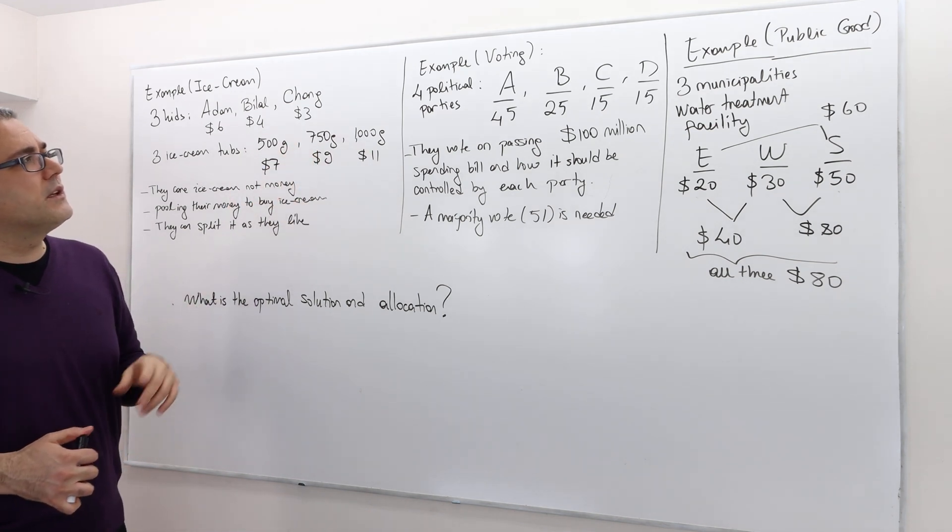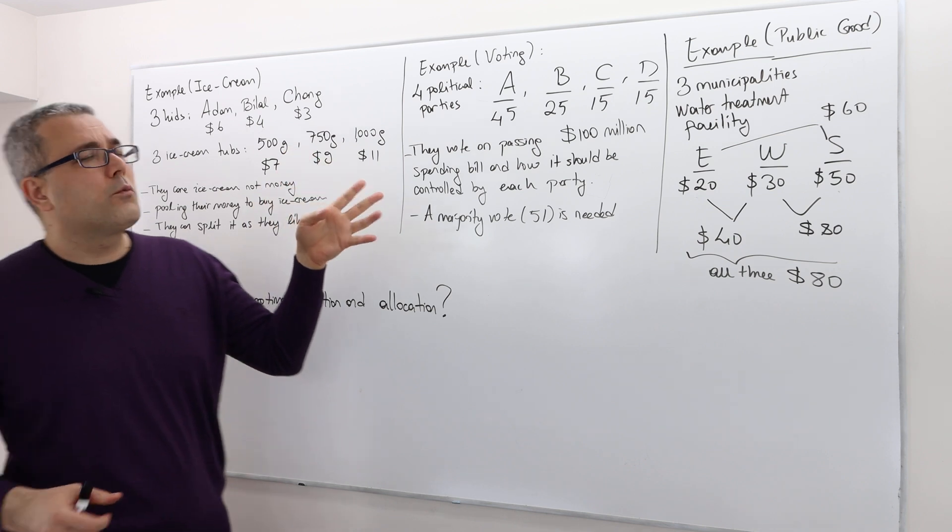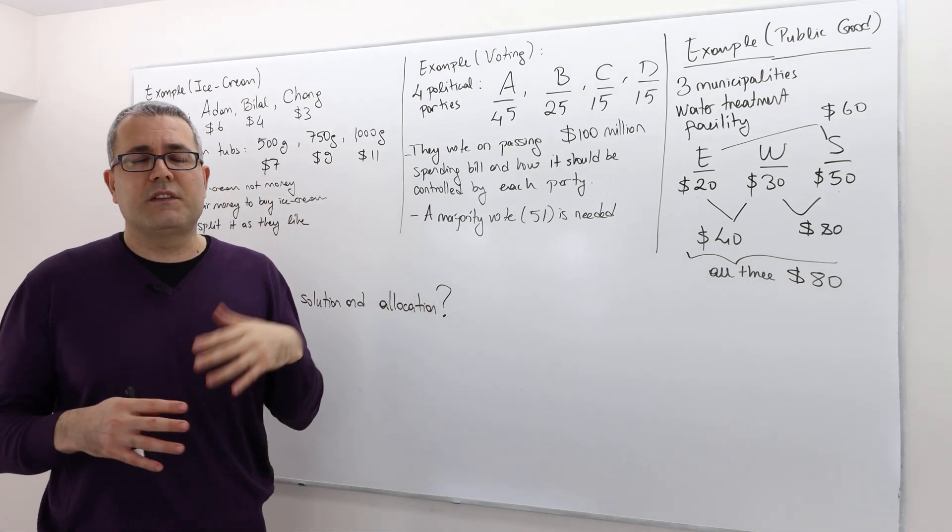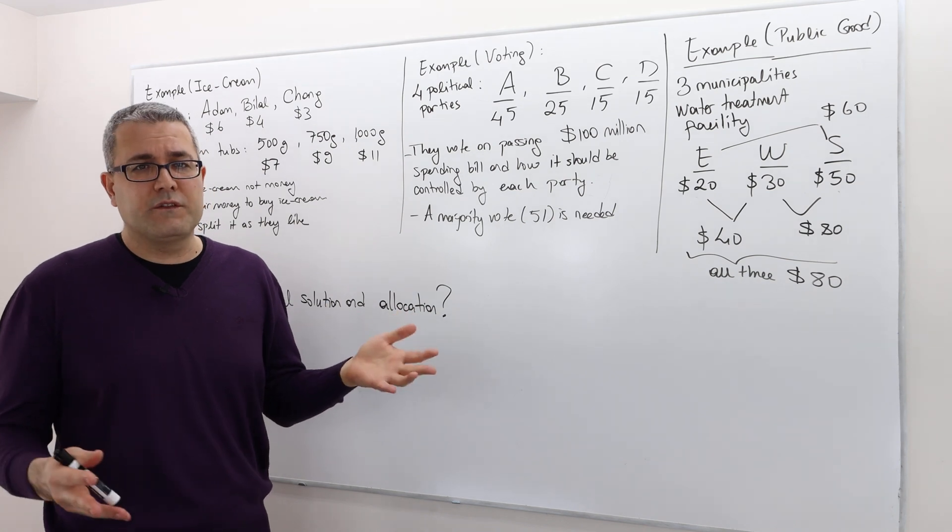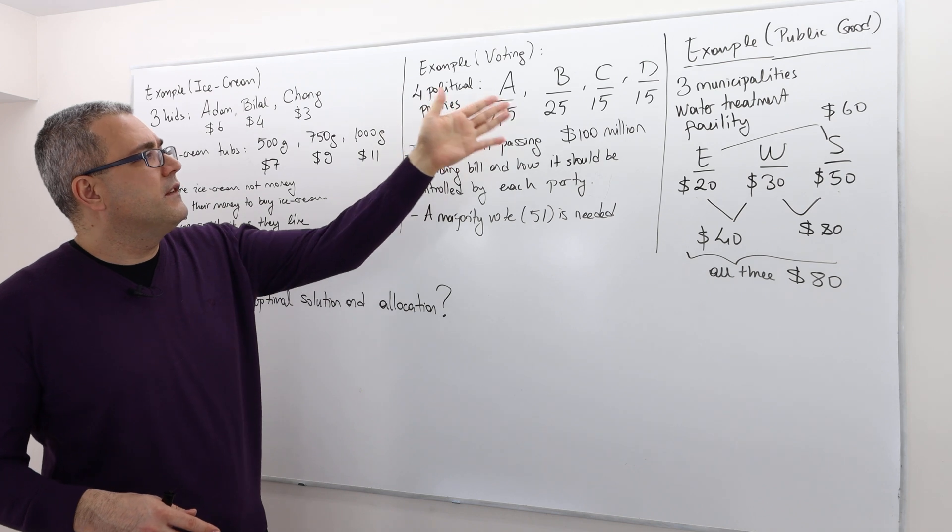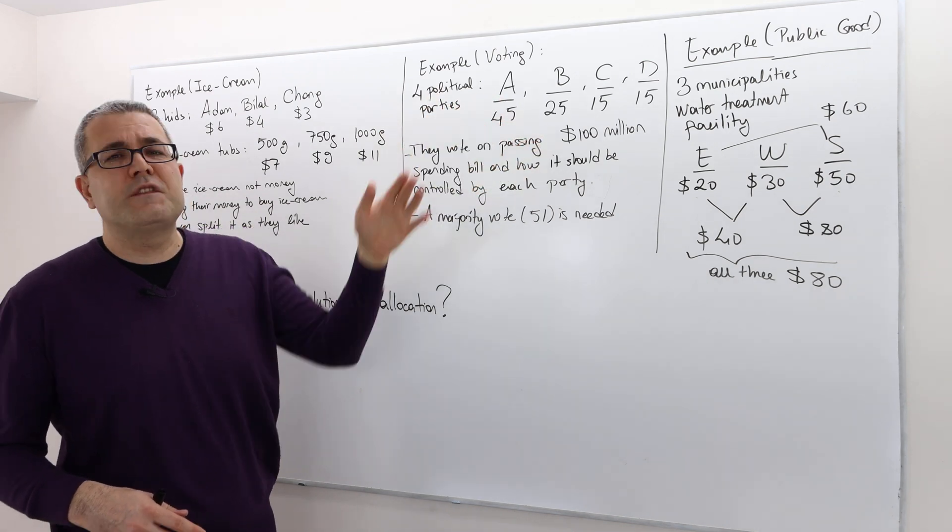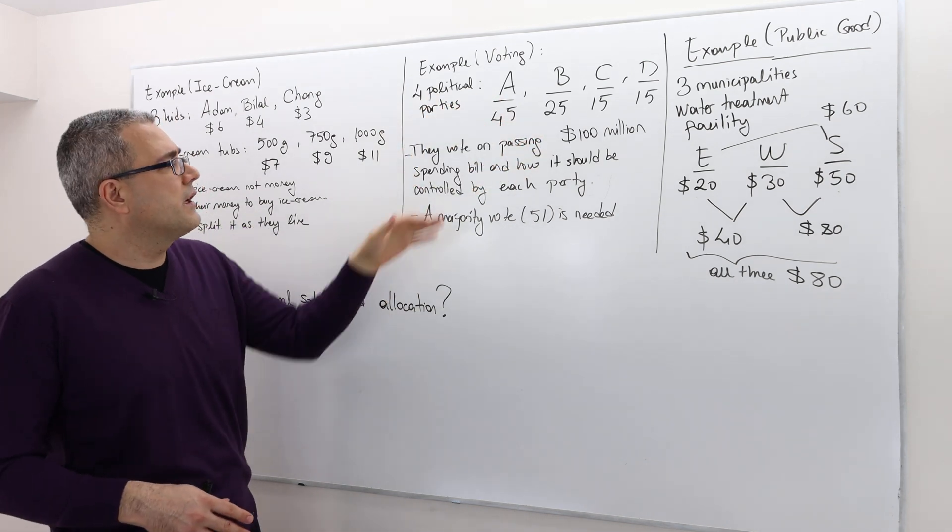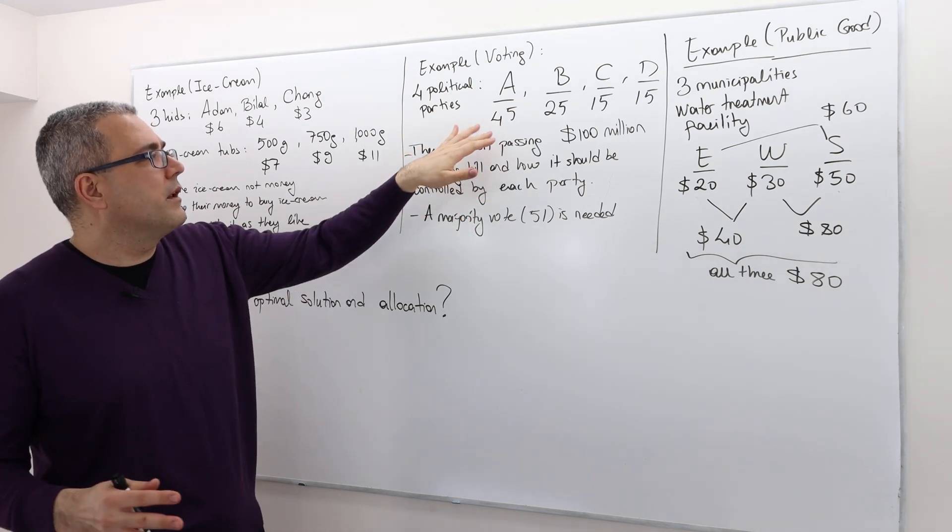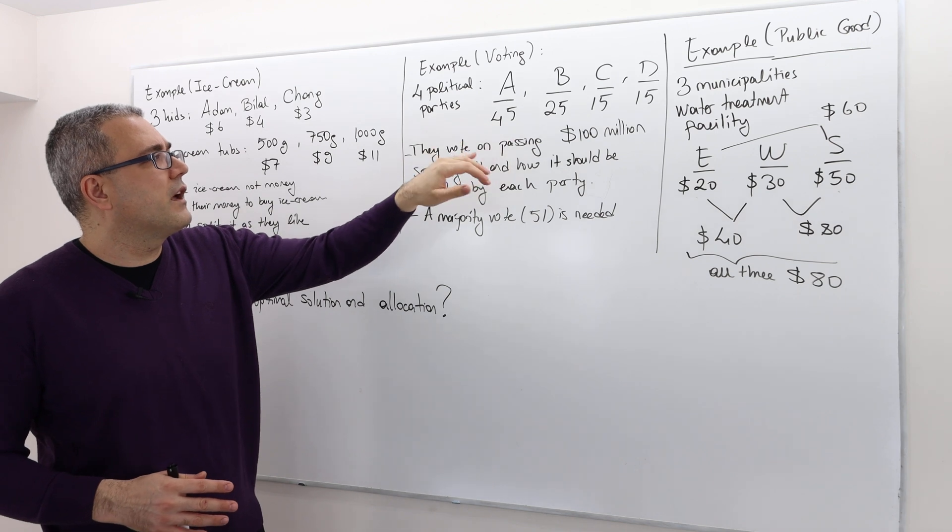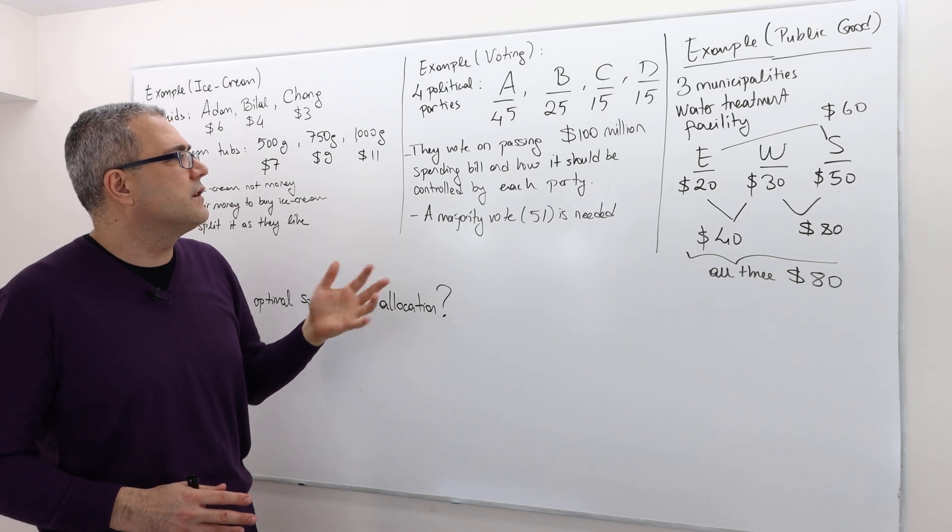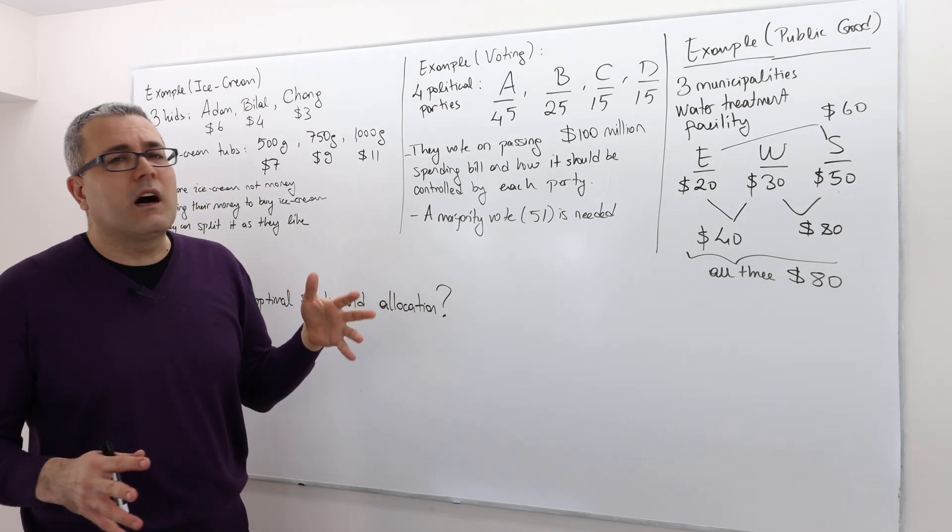Okay, well the second example is voting. There are four political parties - let's suppose this is a parliamentary regime and there are more than two political parties in the parliament: A, B, C, D. These are the number of seats for those parties. Party A has the majority - the biggest number of seats, 45. B has 25, and the other two parties have only 15 seats each.